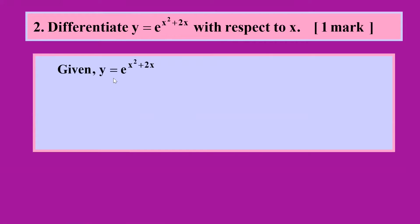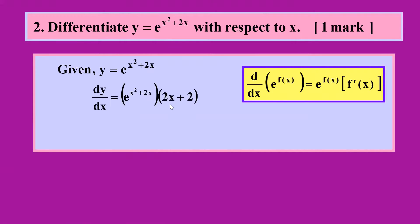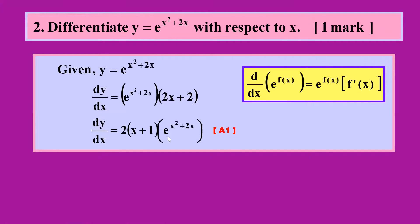For the second example, we differentiate e^(x²+2x). We copy the whole thing first, then differentiate x²+2x and put it at the side. When we differentiate x²+2x we get 2x+2. After simplifying, we factorize it out and put it in front, and that gives you your marks.